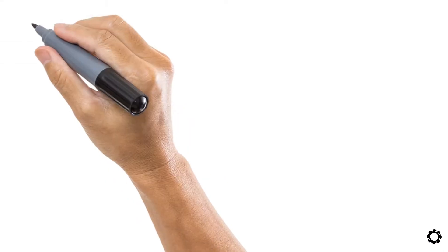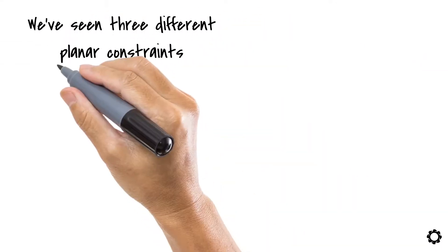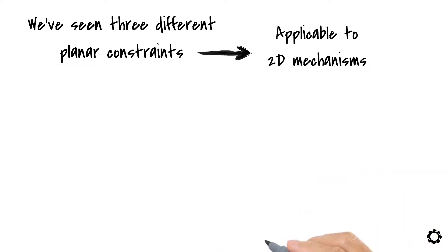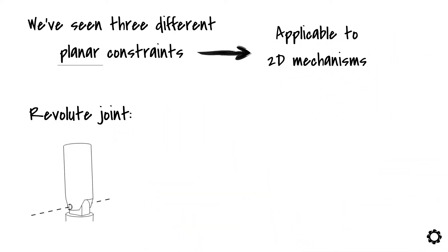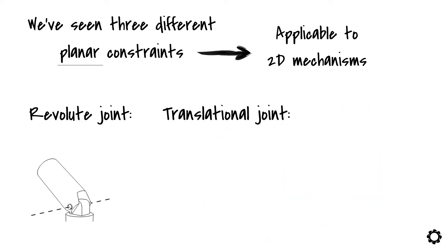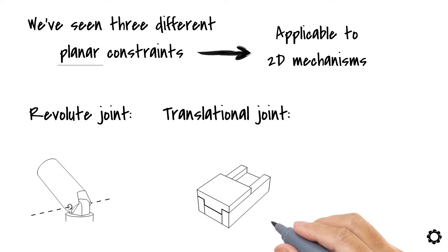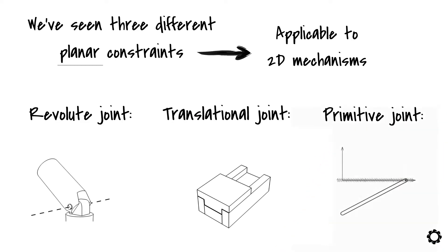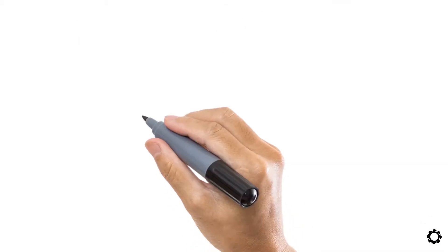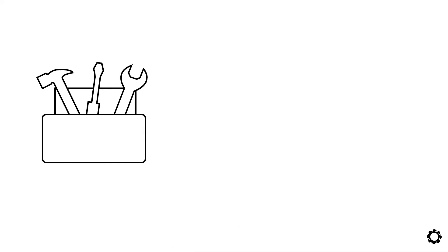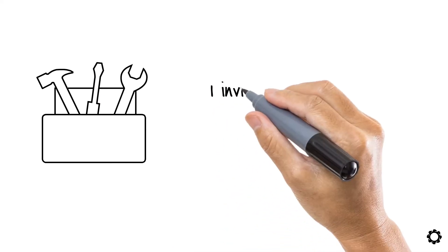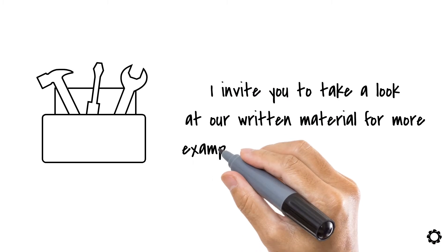Until now, we've seen three different planar constraints — planar because they are applicable to 2D mechanisms. We've talked about the revolute joint which constrains 2 degrees of freedom allowing only a rotation, the translational joint which restricts a rotation and translation permitting only a translation along a prescribed direction, and finally the primitive joint which can be thought of as a combination of the revolute and the translational joint. Now your constraint toolbox is getting heavier with these tools. I invite you to take a look at our written material for more examples about these constraints. Thanks for watching and have a nice day.